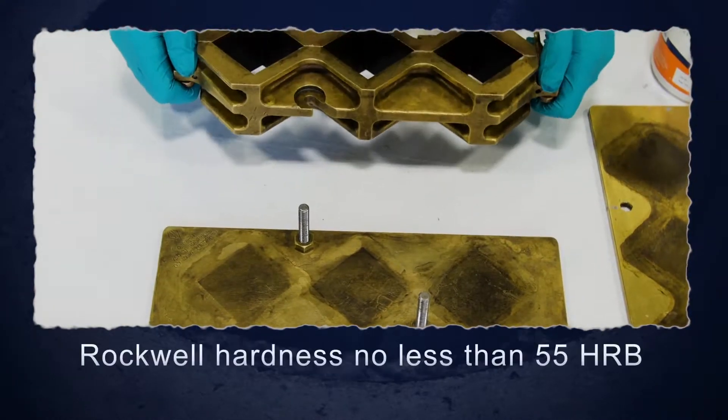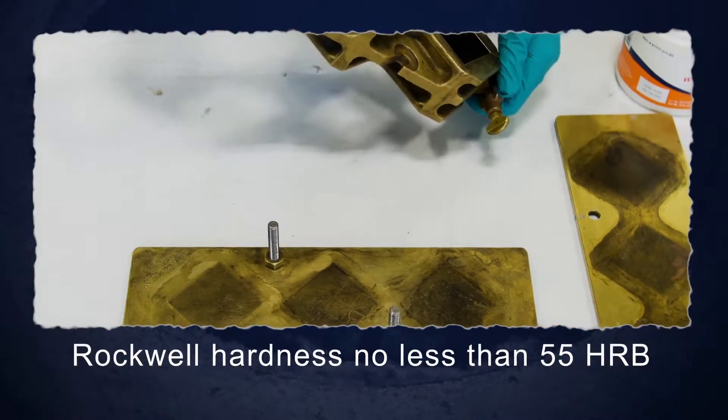For new molds, the Rockwell hardness number of the metal should be no less than 55 HRB.